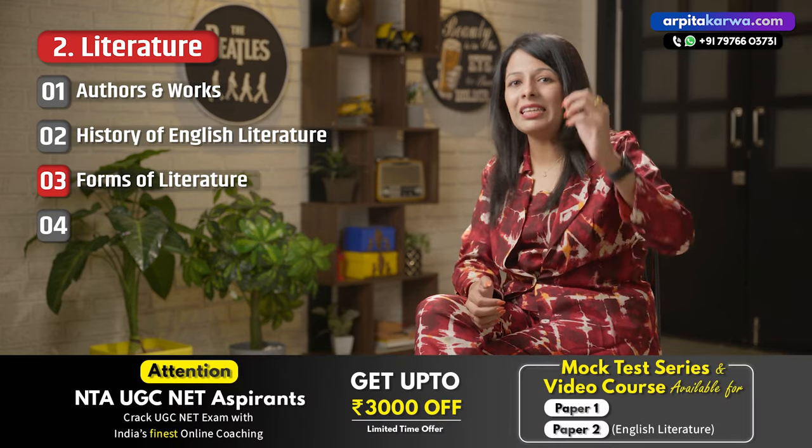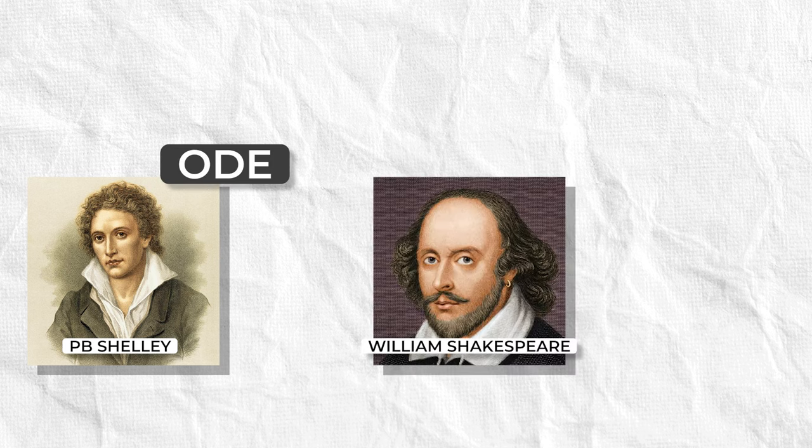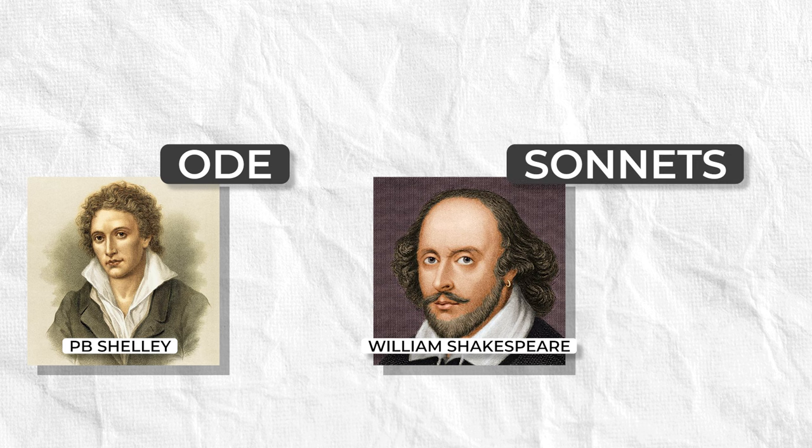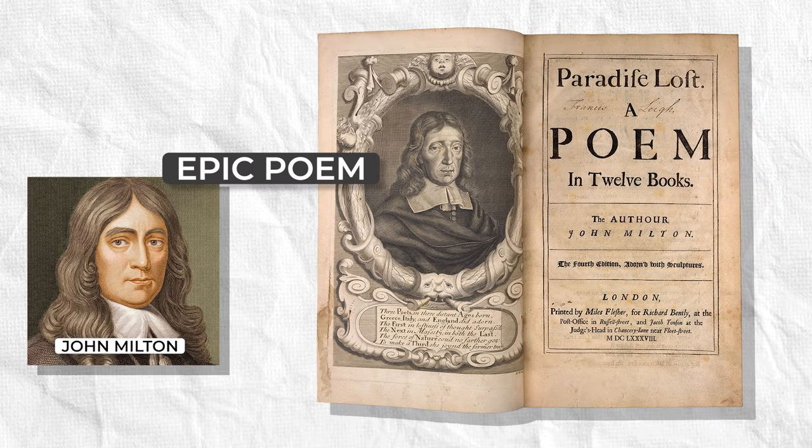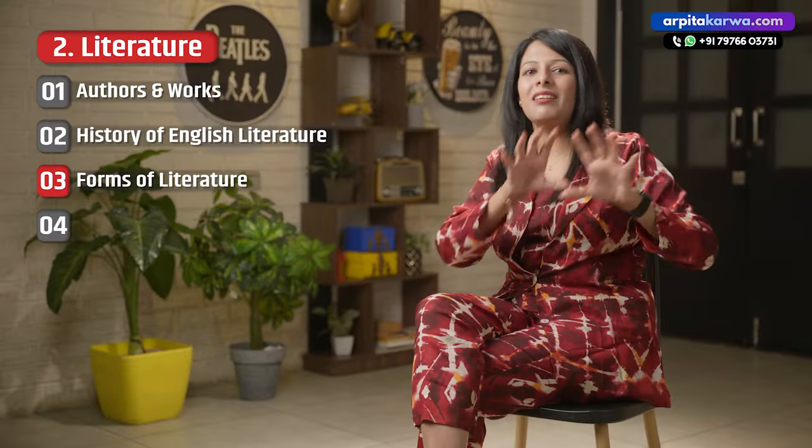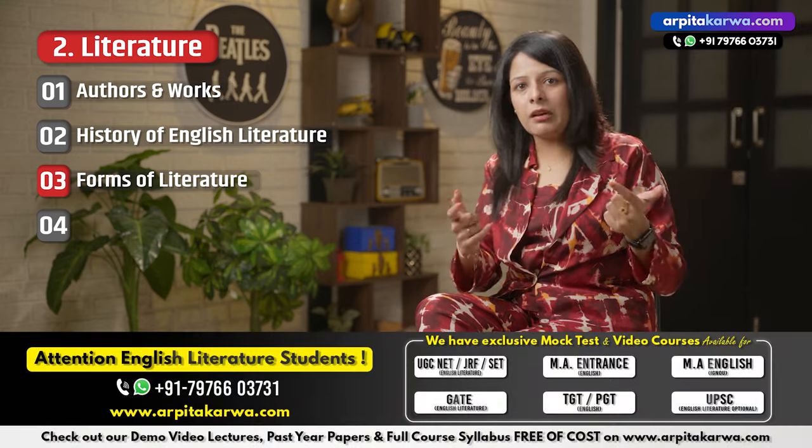The third important topic is Forms of Literature. The forms of literature focus on the types of novels, dramas, and poetry. For example, a poem can be an ode, a sonnet, or an epic. Romantic writer P.B. Shelley wrote a significant number of odes — remember 'Ode to the West Wind.' William Shakespeare wrote sonnets, while Milton's Paradise Lost is an epic poem. There are different forms of poetry, and similarly there are variations within drama and plays.